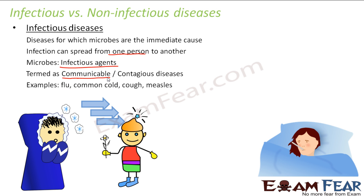Some examples of infectious diseases are flu, common cold, cough, and measles. Flu is a fever that lasts around two to three days and happens to many people, especially during season changes, because it is communicable. When someone sneezes or coughs, other nearby persons also tend to catch the same infection. All of these diseases spread from one person to another.